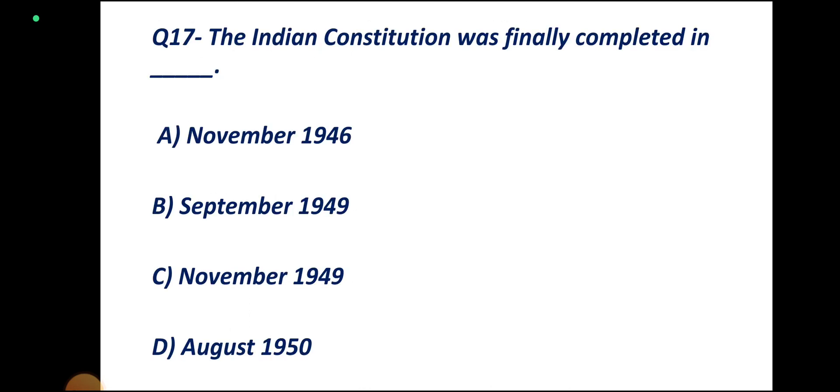Question number 17. The Indian Constitution was finally completed in which month and year? Options: November 1946, September 1949, November 1949, August 1950. Correct answer: Option C, November 1949.